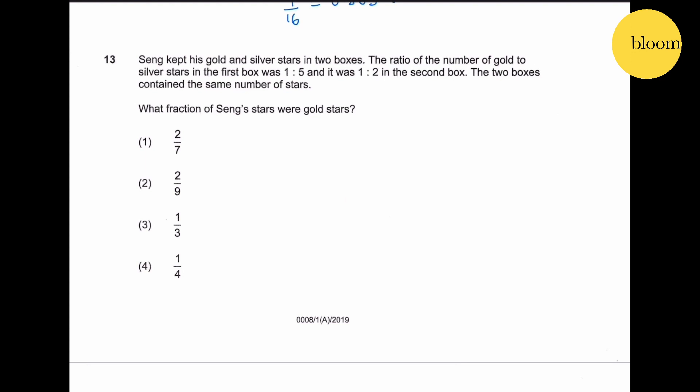Question 13: Seng kept his gold and silver stars in two boxes. The ratio of the number of gold to silver stars in the first box was 1 is to 5, and it was 1 is to 2 in the second box. The two boxes contain the same number of stars. What fraction of Seng's stars were gold stars? Let's see - box 1, gold to silver is 1 is to 5. Box 2 is 1 is to 2. Box 1 and box 2 have the same number.